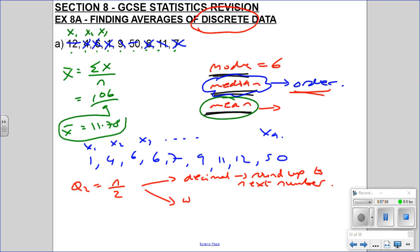If your number is, if n over 2 is a whole number, so an integer, we go halfway between that number and the next. So in this case, Q2, n is 9 over 2, so that's the 4.5th bit of data, but as it's a decimal, we're going to round up. So this is the fifth entry. So the fifth entry, 1, 2, 3, 4, 5, is 7. So this is our median, 7.